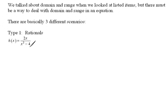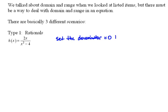Sometimes it's easier to figure out what you can't use. When we're dealing with a rational equation — rational meaning ratio, a ratio of polynomials — it has an x in a denominator. When we look for the domain of a rational expression, we set the denominator equal to 0 and find the holes in the domain.